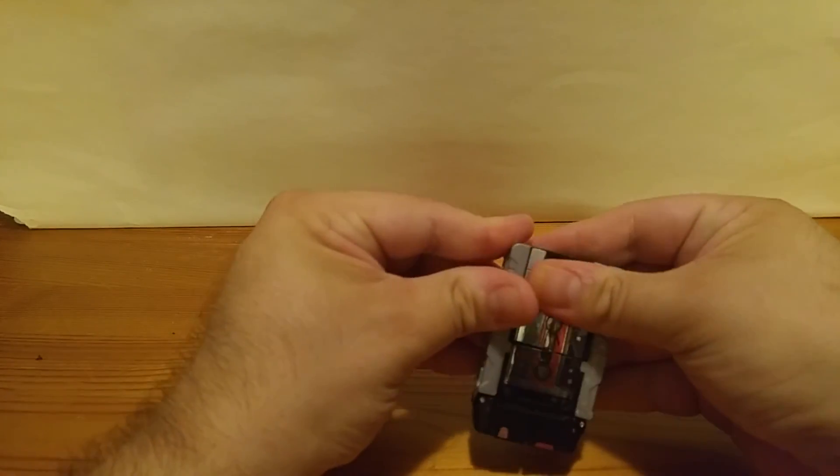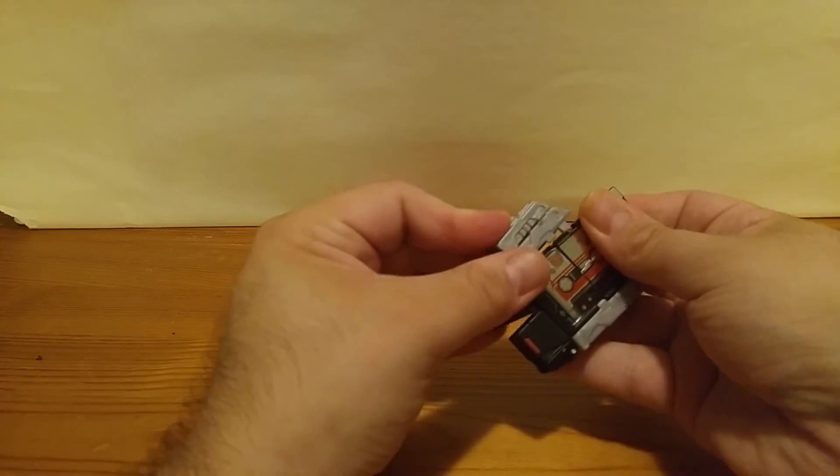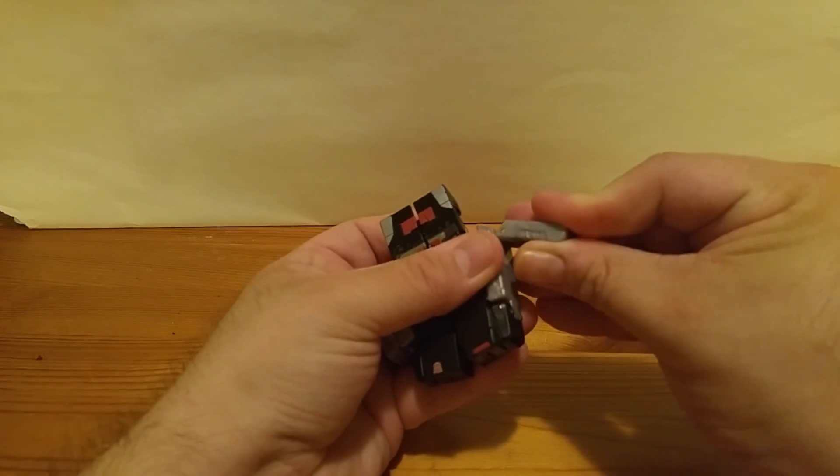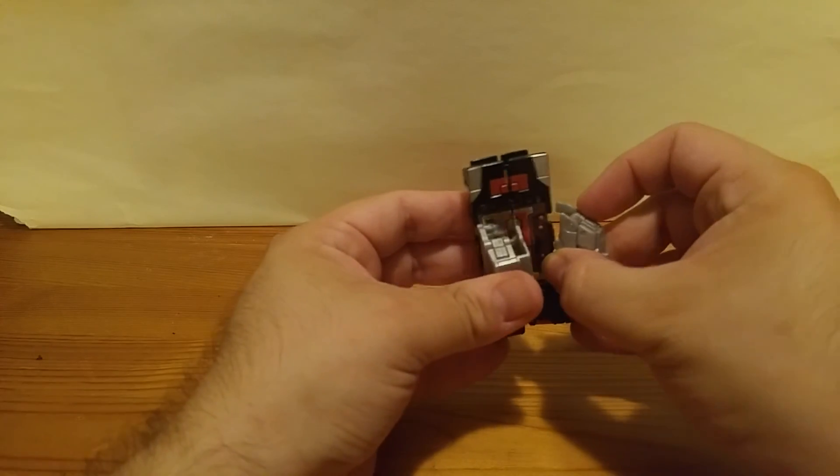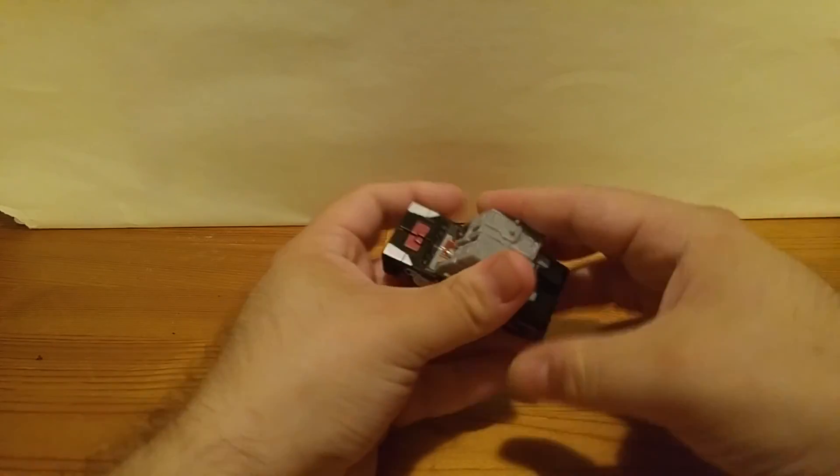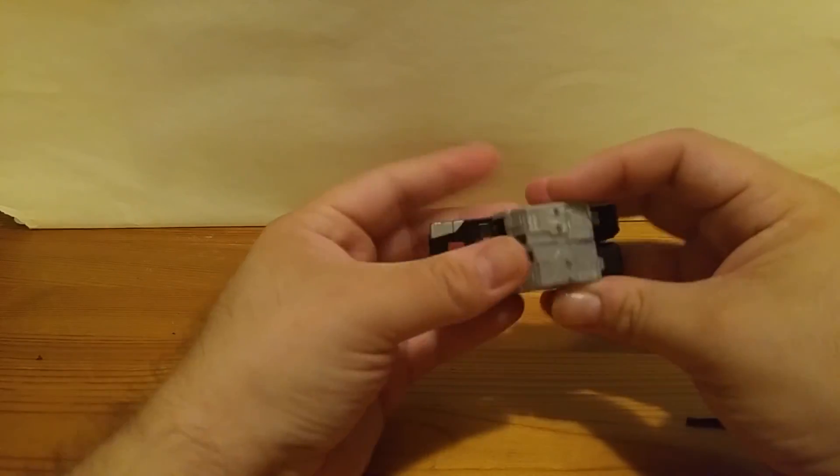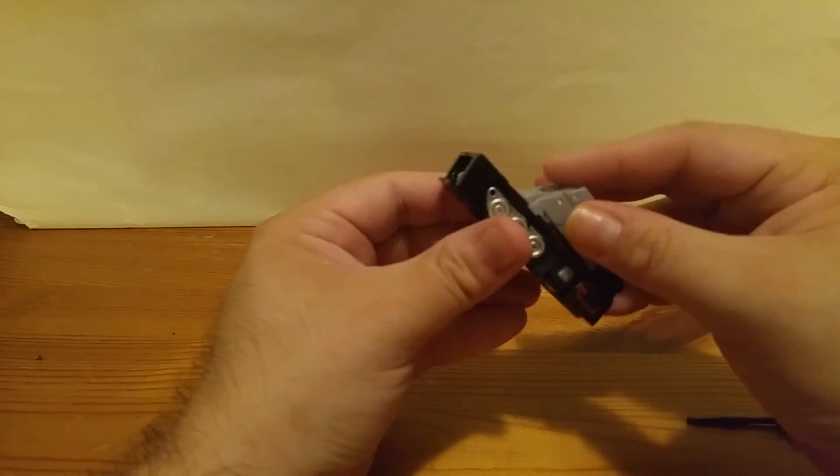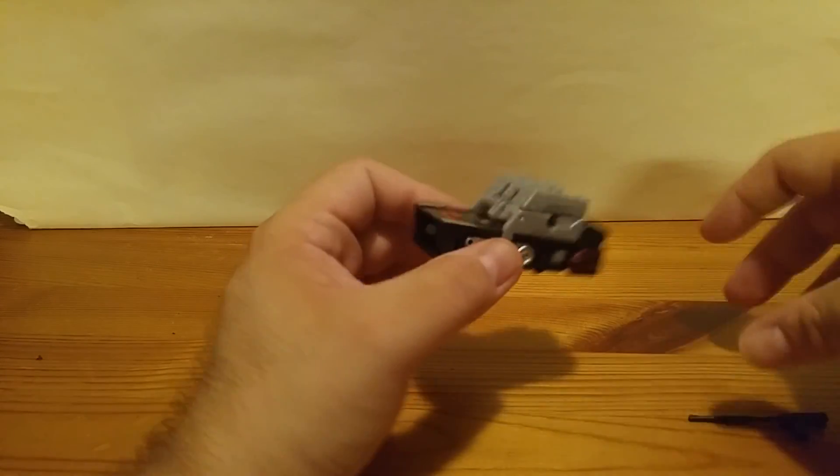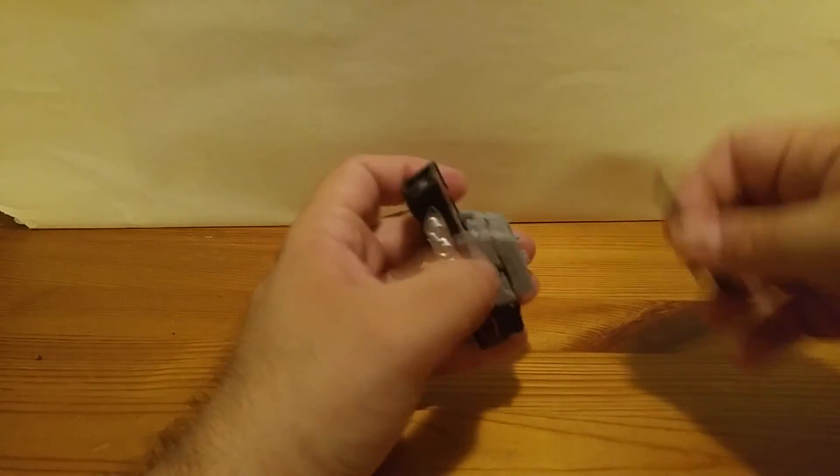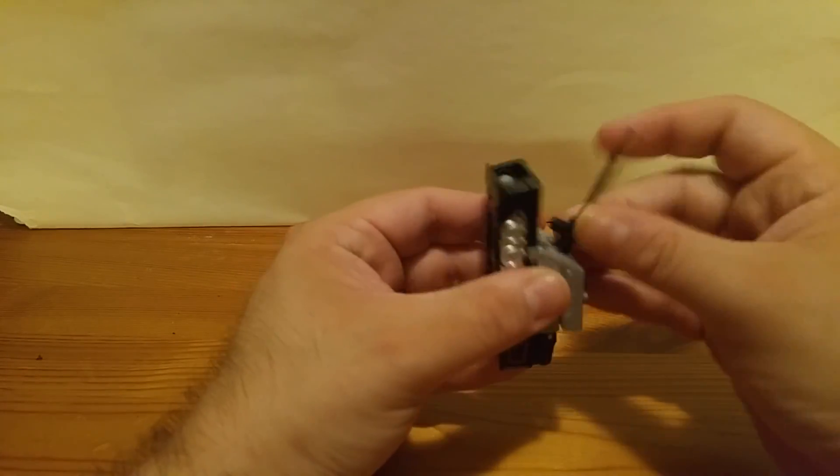I am going to pull these grey parts back and rotate it up, putting the arms up here. And now they are going to form the top of the tank. I am going to squeeze them together. Here are the treads, here is the top portion to make up the tank, and here is the cannon.